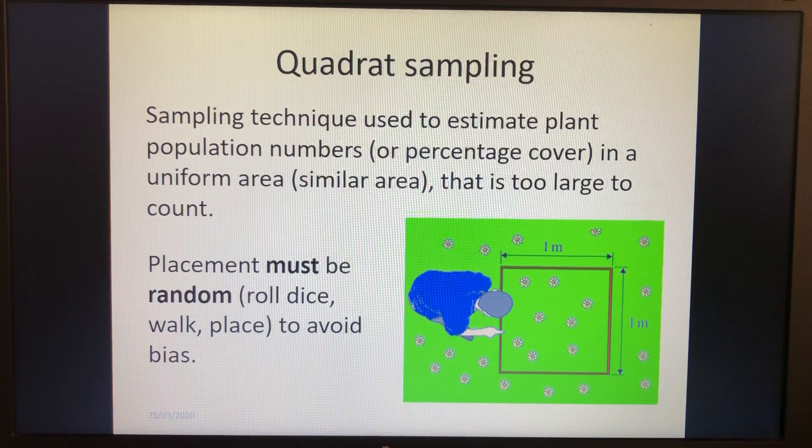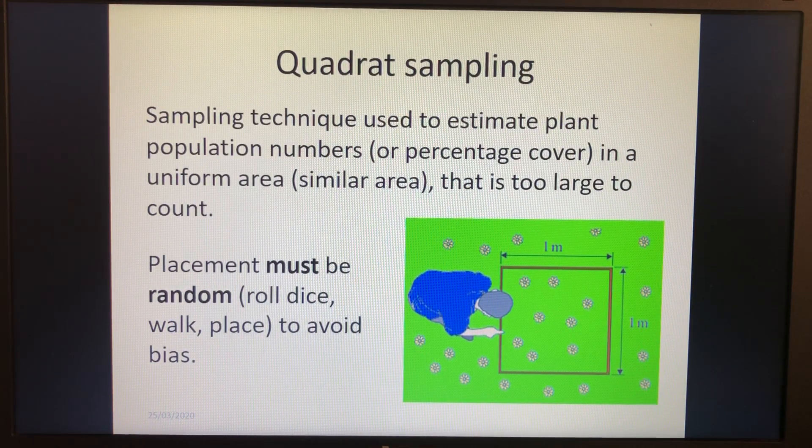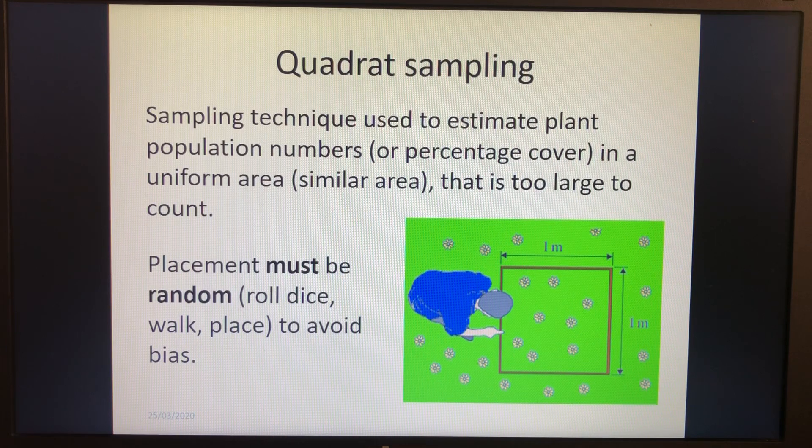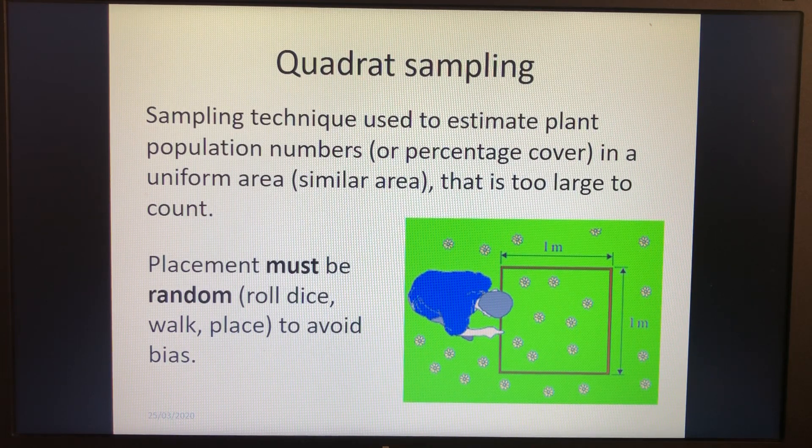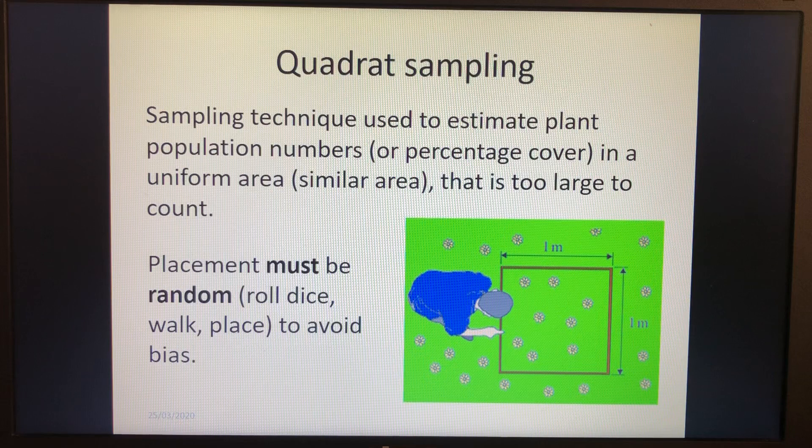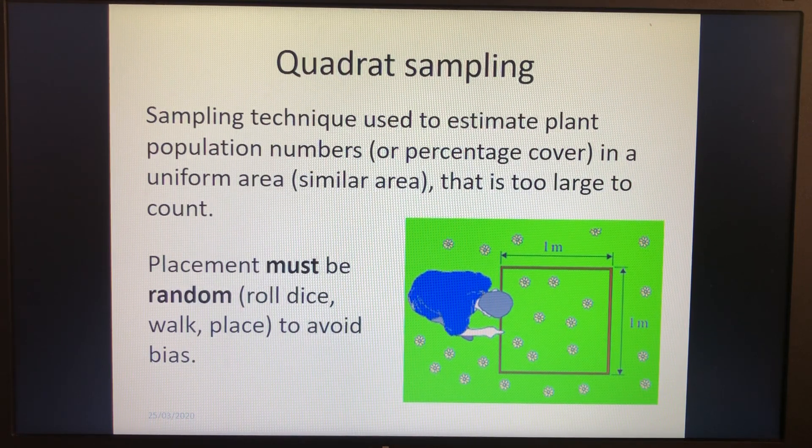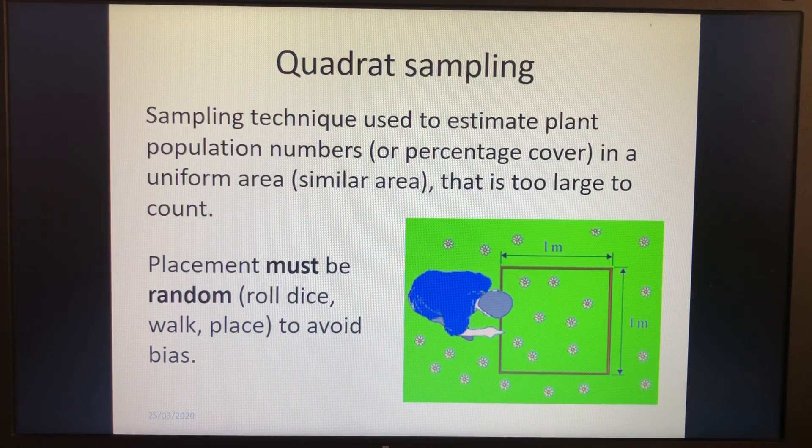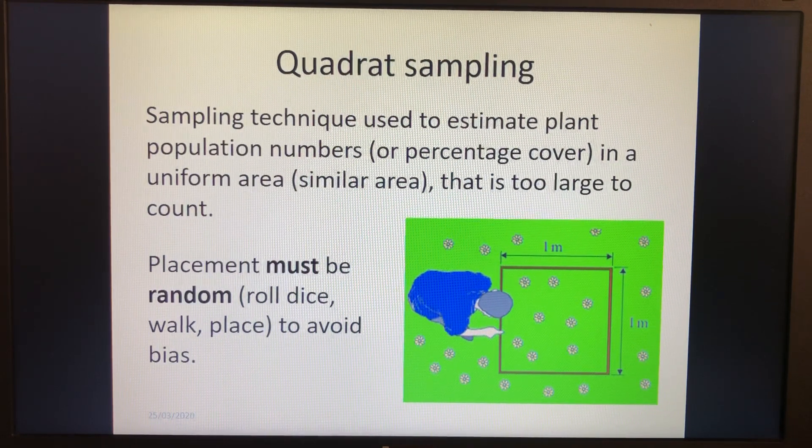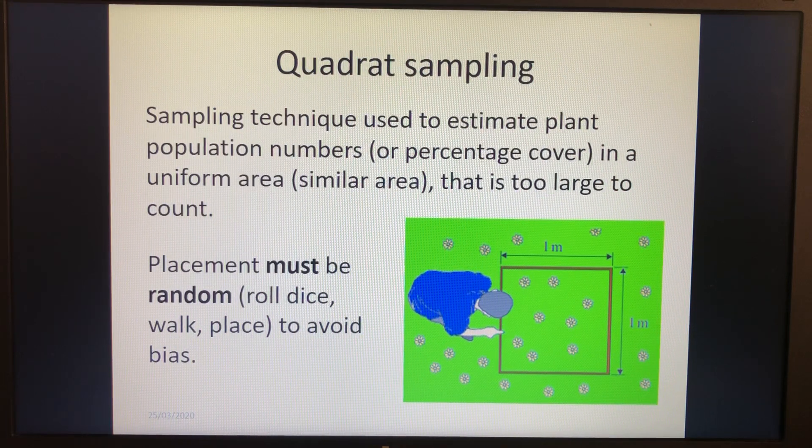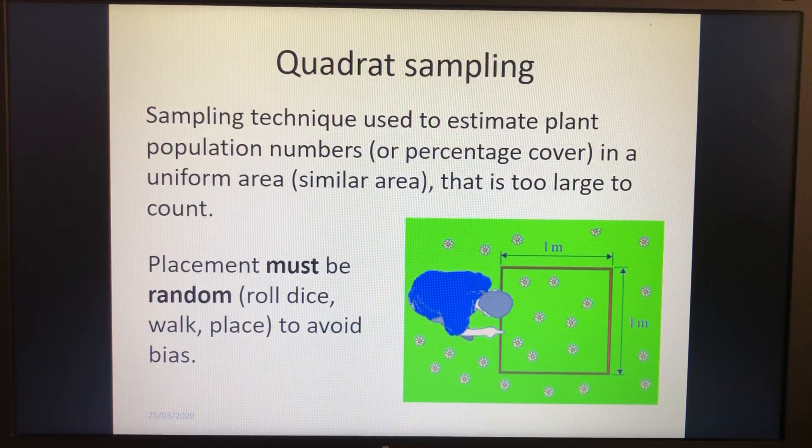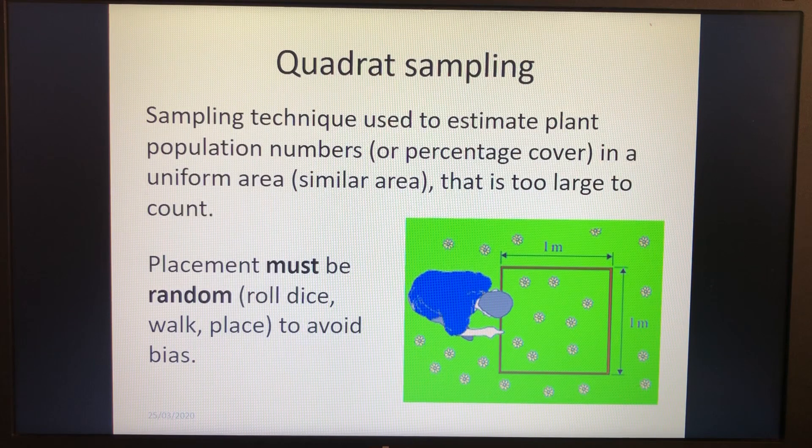So quadrat sampling is, and the quadrat is the frame, is used to estimate plant populations or percentage cover. So it could be that we're looking at the average percentage cover across an area, in which case we're looking at what percentage of each quadrat is filled, or it could be that we're looking at actual numbers. And exam questions will go either way with that. You may get looking at percentage cover, you may get population numbers in a uniform area. And that is a similar area. So it's similar across the whole area and it's too large to count. So we can't just, you know, if it was a really small garden or vegetable patch or something, we could probably count that quite easily, but we need to use this when the area is too large to count.